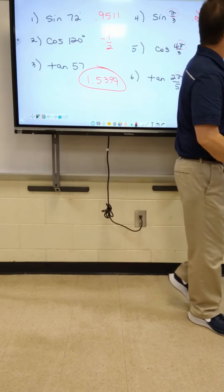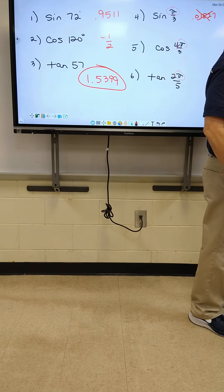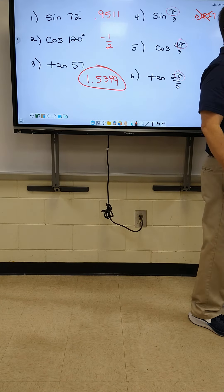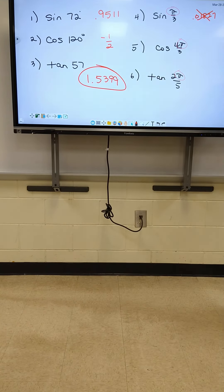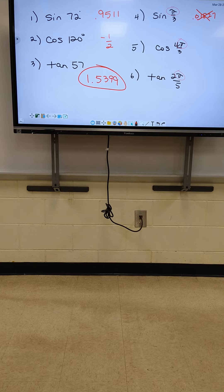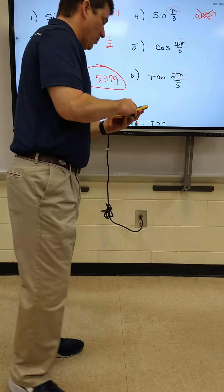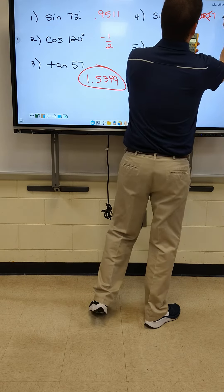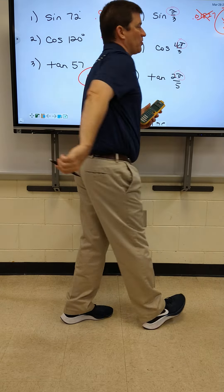Everybody go to the mode button at the top of your calculator. Arrow over one place to RAD — that's radian — and hit enter. When you do that, it should change in the top right-hand corner from degree to radian. After that, hit clear, and now you can type your number in. Type in sine of pi over three, and it gives me root three over two — that is the correct answer.